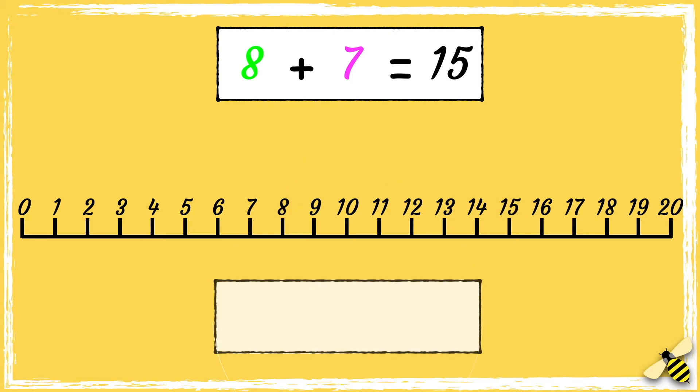Let's check this by using the inverse operation. So we start from 15, and we're taking away 7, so we need to jump back 7 digits: 1, 2, 3, 4, 5, 6, 7. We've landed on 8.